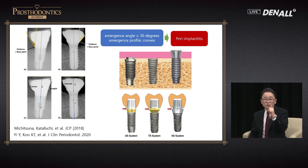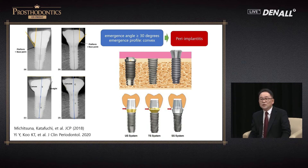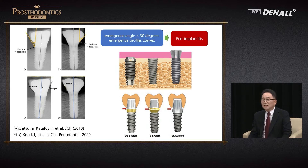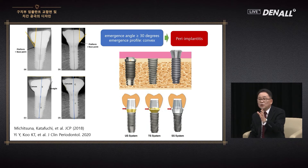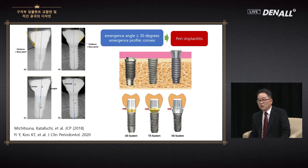Regarding the embrasure, when the emergence angle is more than 30 degrees, it's like a cantilever. And if it is convex — not concave like picture C — they create peri-implantitis according to many papers. Depending on the type of implant, things can be different. In the molar area, in the posterior region, tissue-level implant is very good. It is higher, so you can compensate for the resorbed bone, and the width is designed to prevent fracture.